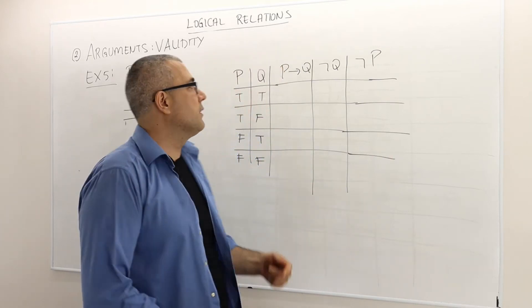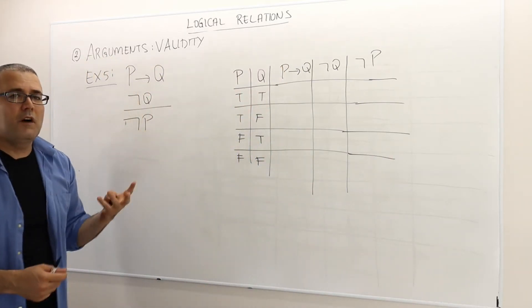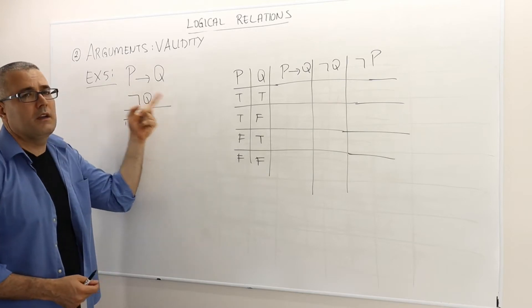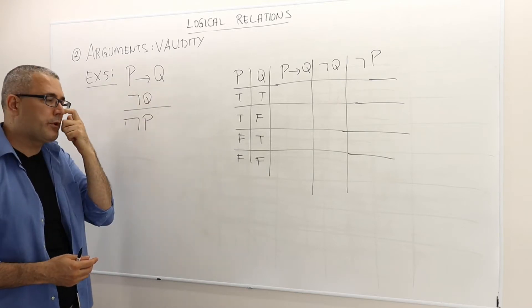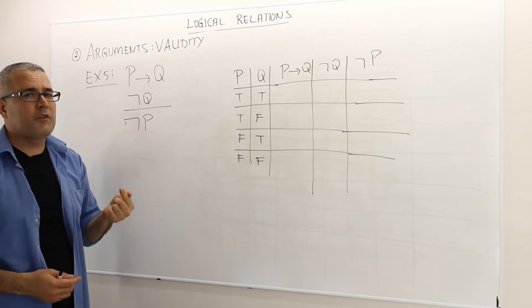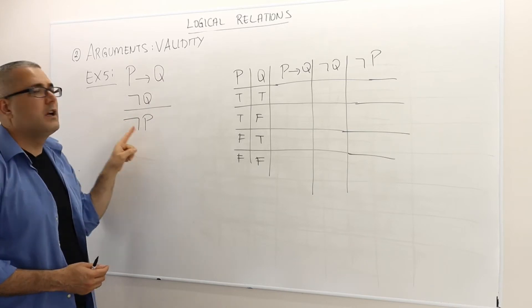Okay guys, my final example, example five, is the following argument. P implies Q, the conditional statement, as premise number one, not Q as premise number two, and then the conclusion, not P.